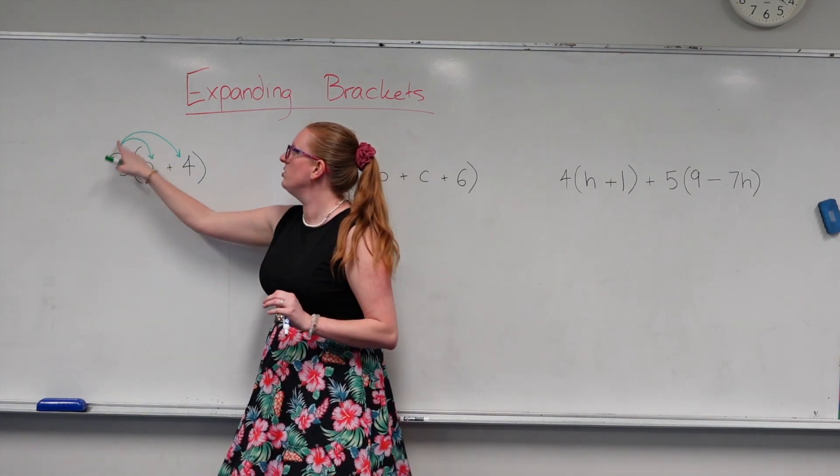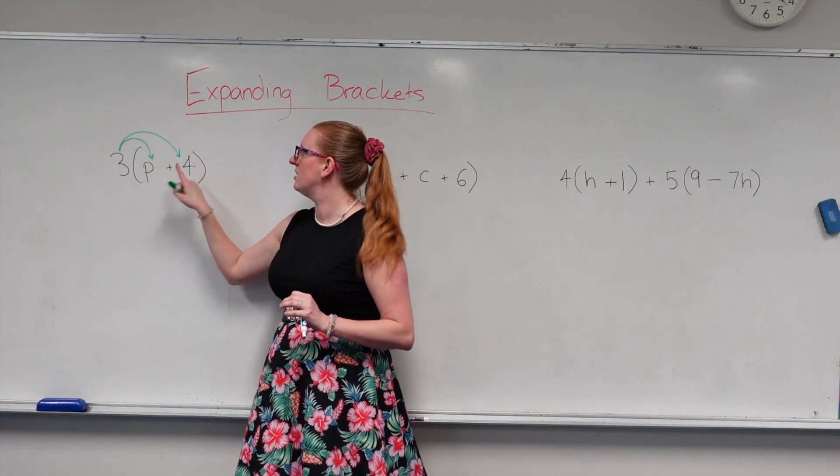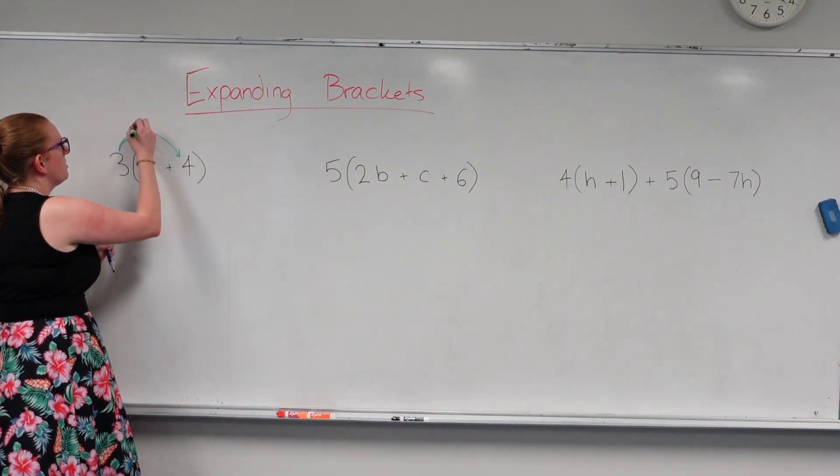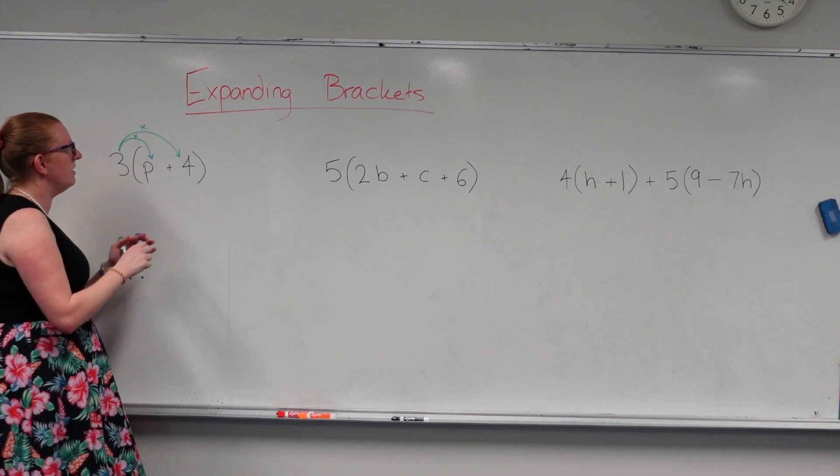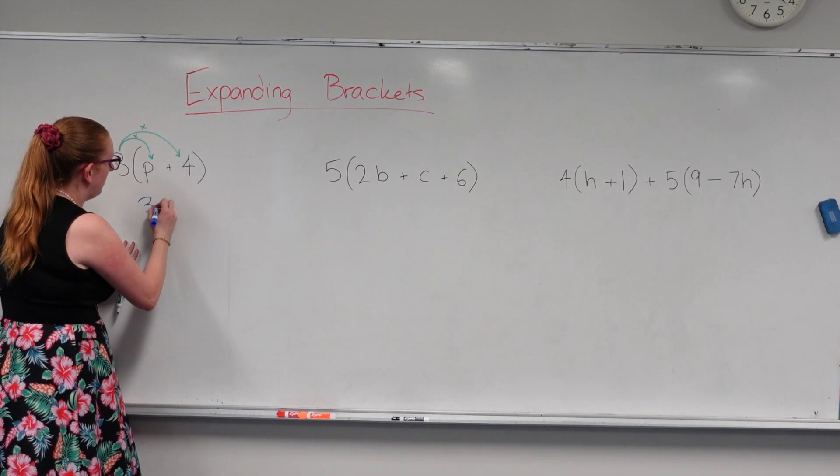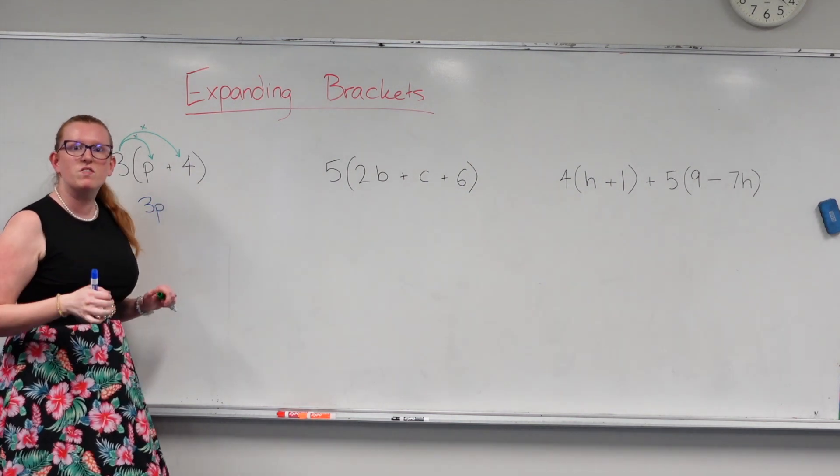So I need to be doing two separate lots of multiplication. So here I've got 3, these are all times, so I'm going to put little times up there. So 3 times p gives me 3p. Cool. That's the first one done.